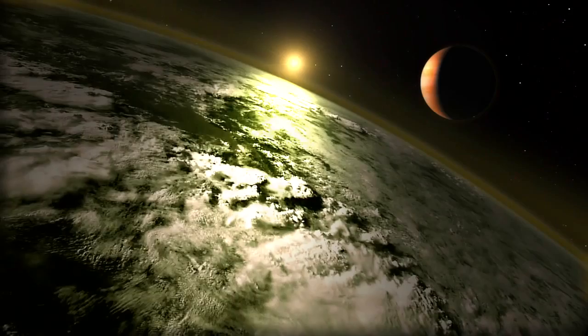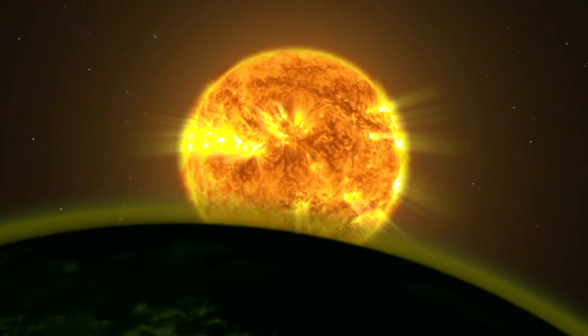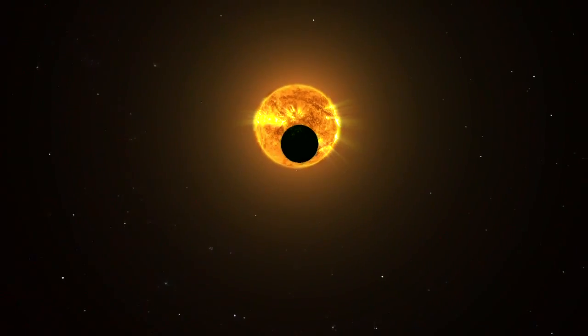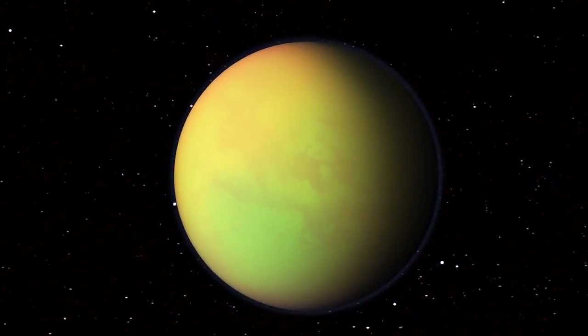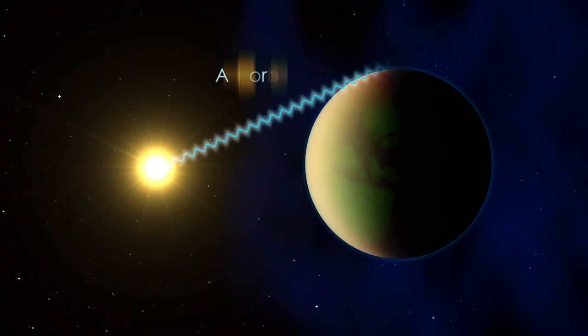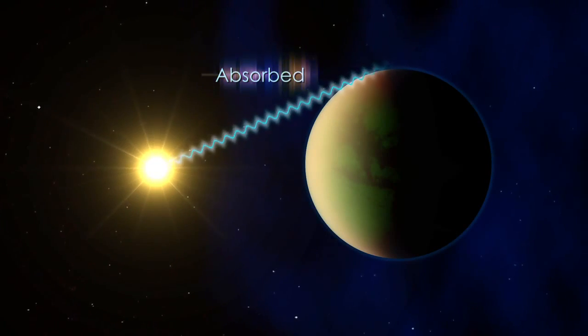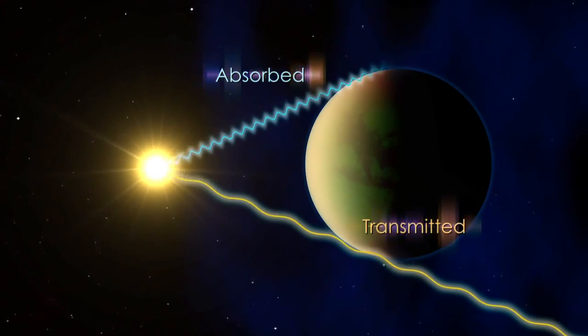But to fully understand an exoplanet, astronomers must study its atmosphere, and the information that they need is encoded during a transit. As the planet crosses its star, its atmosphere absorbs certain wavelengths of light, or colors, while allowing other wavelengths to pass through.